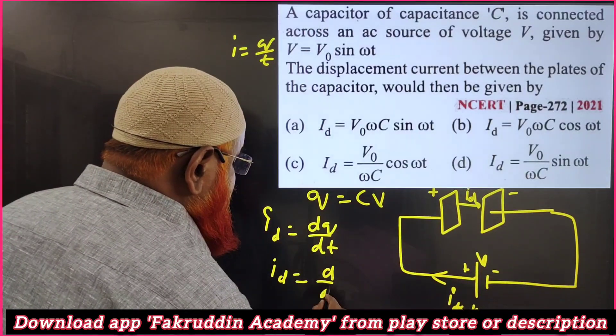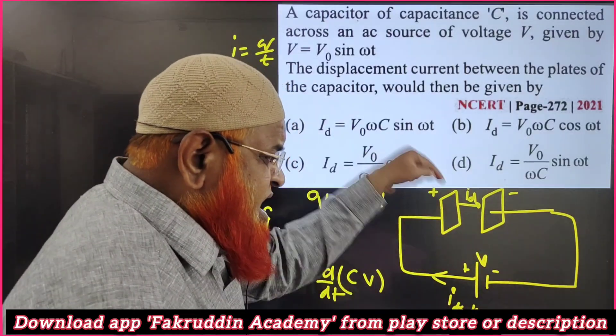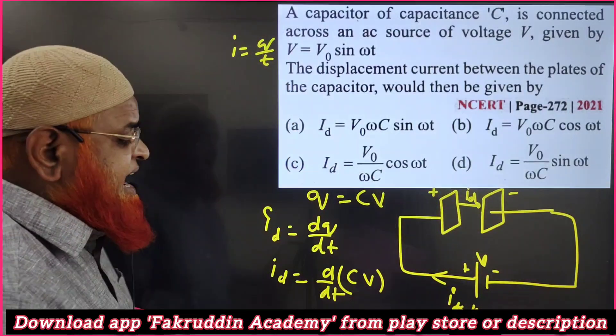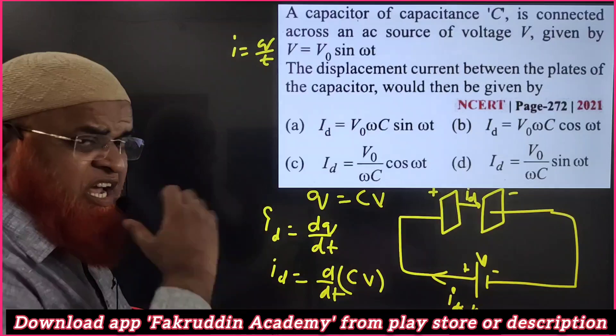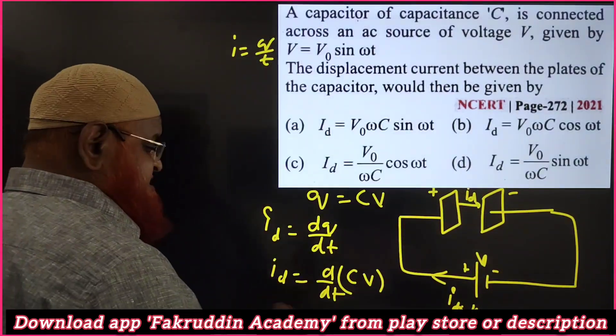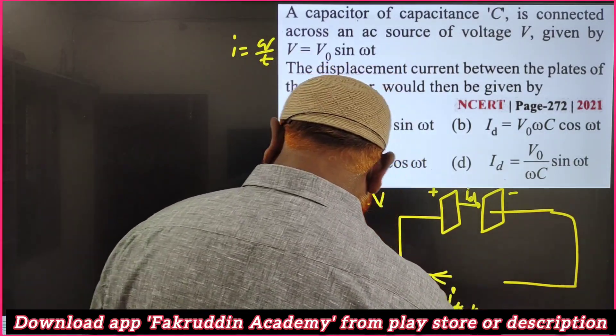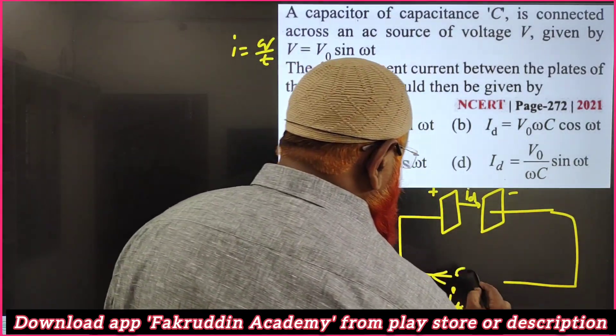Capacitance is constant whereas potential is changing. It is said in the problem that you have to consider the AC current.